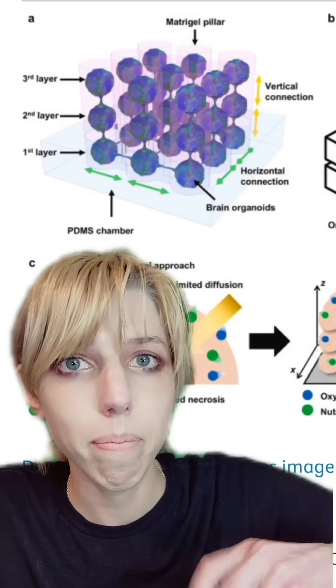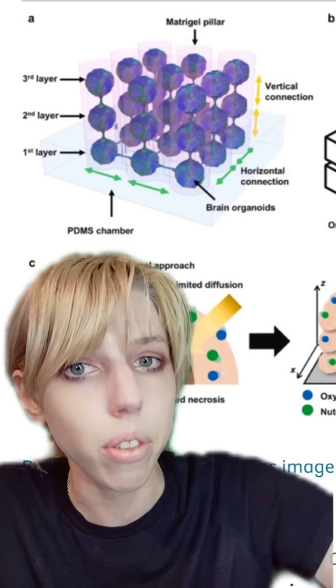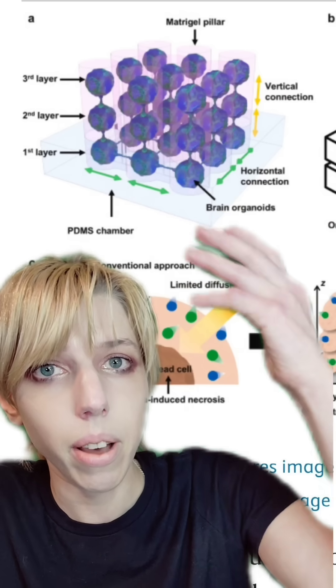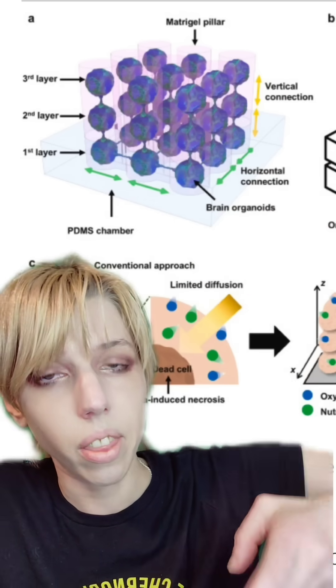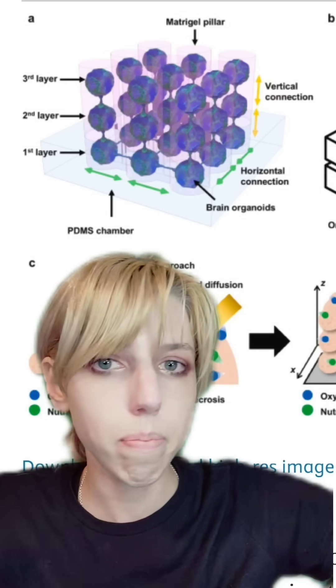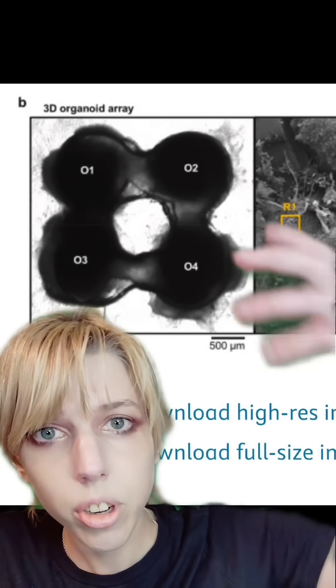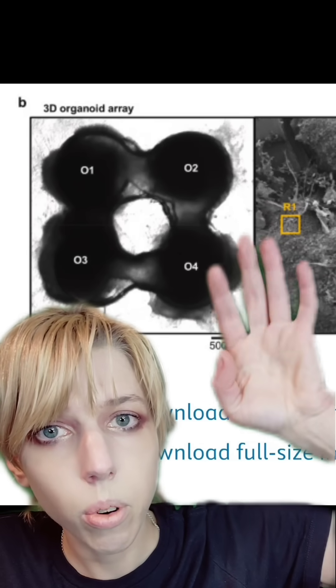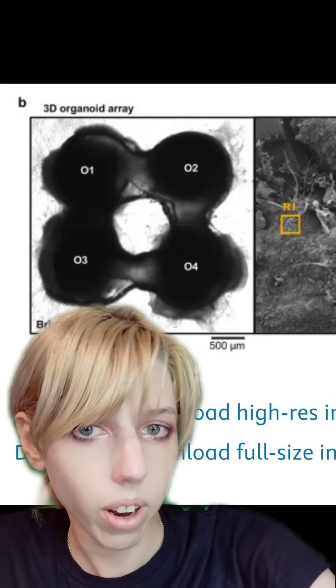They grew them from single cells in matrigel, which is essentially mouse tumor jello. This gel allows them to grow into each other. They'll grow into just about anything next to each other. They operate very much like Legos. You can just pop them together. In this case, they were just grown near each other and they grew little projections into other organoids.